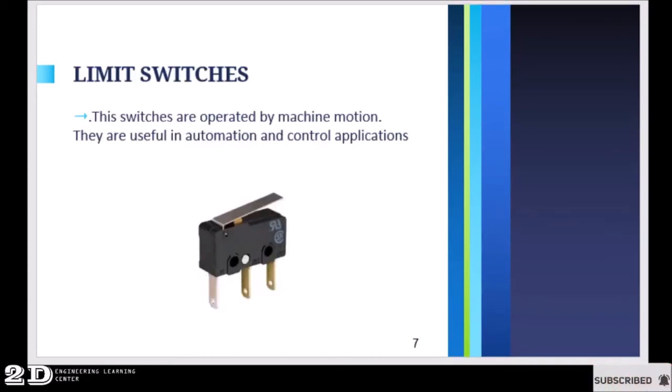Then you have the limit switches. It is basically a process switch which is operated by machine motion. They are useful in automation and control applications. These switches can be on or off on machine motion. For example, if a certain machine will move on this part, then it will collide with the switch or it will touch the switch, and it could be turned on or turned off. That is how a limit switch works.